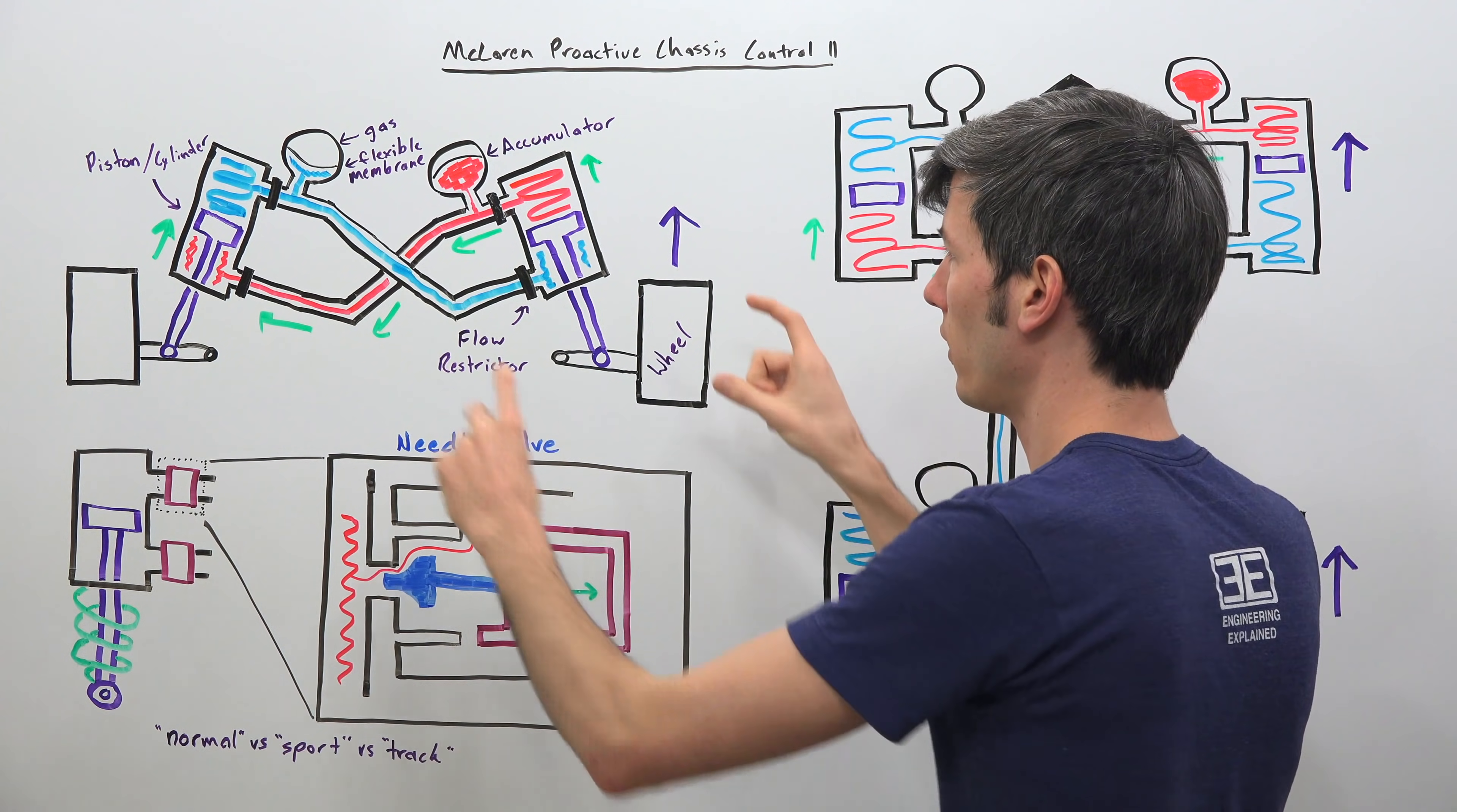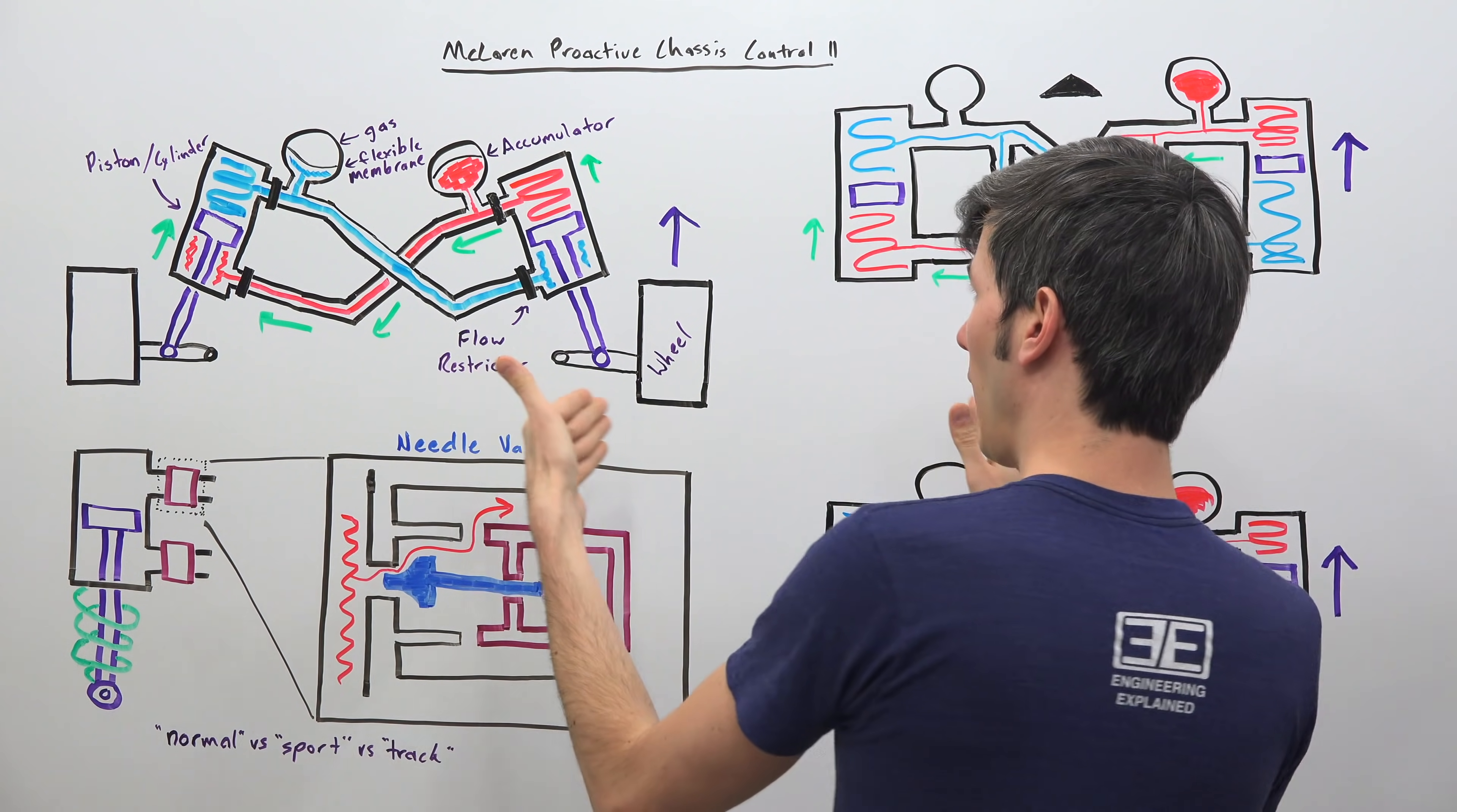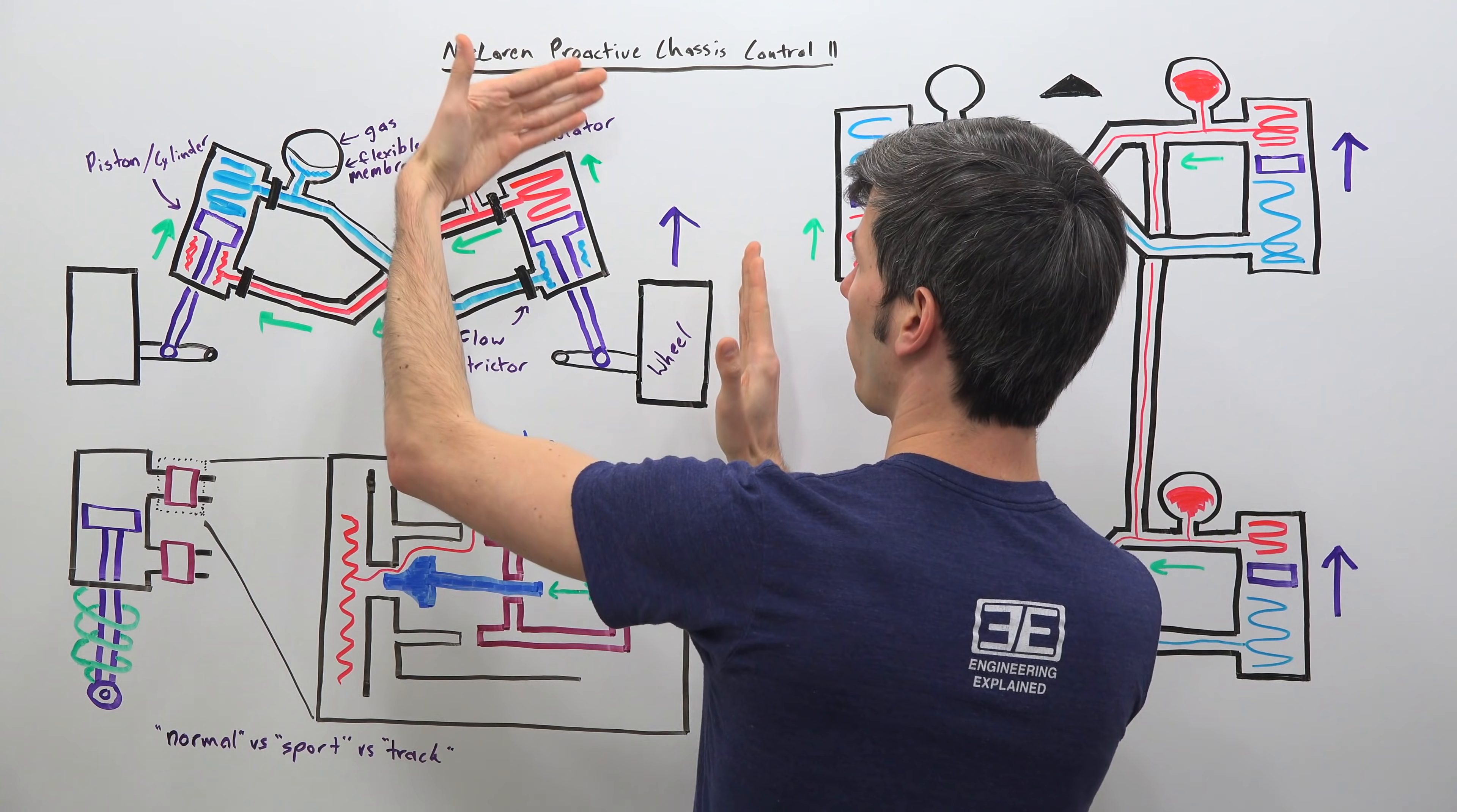Essentially what you're doing is you're eliminating an anti-roll bar and you're instead using a link between your two dampers in order to achieve that. So let's say the car is taking a hard left hand turn so the car is going to want to lean on this right side which means this right wheel is going to want to be forced up.